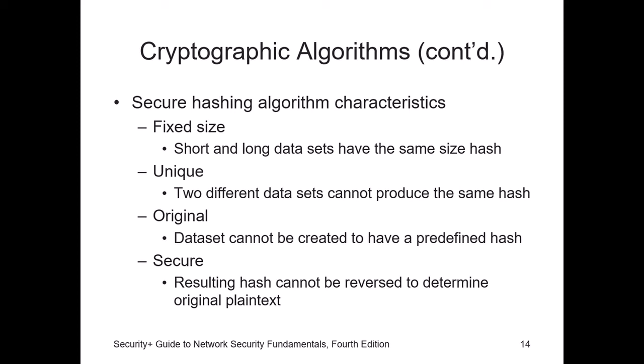Remember the characteristics of the hash algorithm — write down these four points. It's fixed in size, meaning the cipher text output is always one fixed size — let's say 128 bits — regardless of how big the data is. It's unique: that number is unique to the actual data, and it's almost impossible for two different pieces of data to get the same hash. It's original — you can never find out what the data is from the hash alone. And it's secured — it cannot be reversed to determine the original plain text.